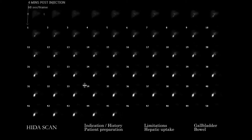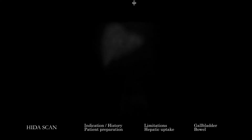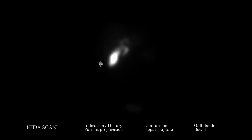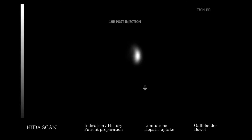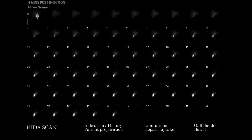As we look at the study, this is the summary image, and then we have the various time points starting after injection and going through to about an hour. We also have a single image — this is a right lateral view, which has been relabeled here. The summary information shows scintigraphic images at various time points, starting at just after injection, around four minutes post-injection, and following through for about an hour.